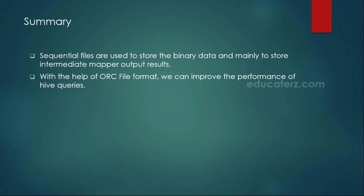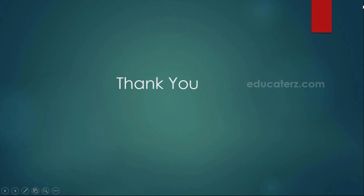So like this, we have different file formats: sequential file format, which is for binary data and is used when you want to store intermediate mapper results; and ORC, which is Optimized Row Columnar — a very good file format you can use with stored as ORC. It supports compression and improves performance for both reading and writing. Thank you, let's catch up in the next module.